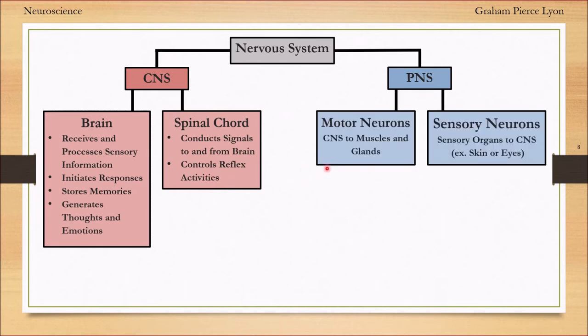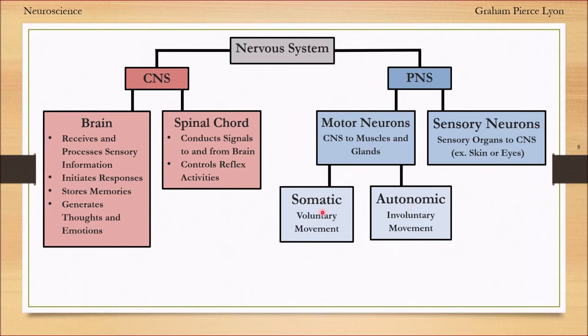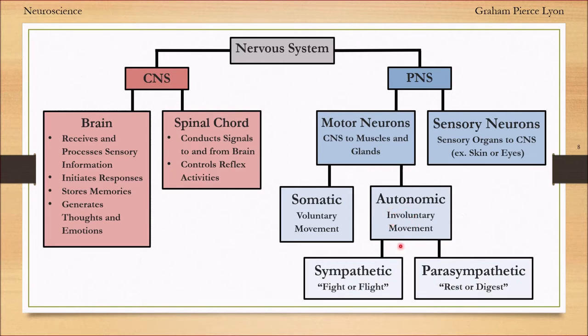The peripheral nervous system can split into motor neurons and sensory neurons - muscles and glands versus sensory organs like skin or eyes. We can split that further into somatic and autonomic for voluntary and involuntary movement. The autonomic includes sympathetic and parasympathetic - fight or flight versus rest or digest. Breathing could be voluntary or involuntary.